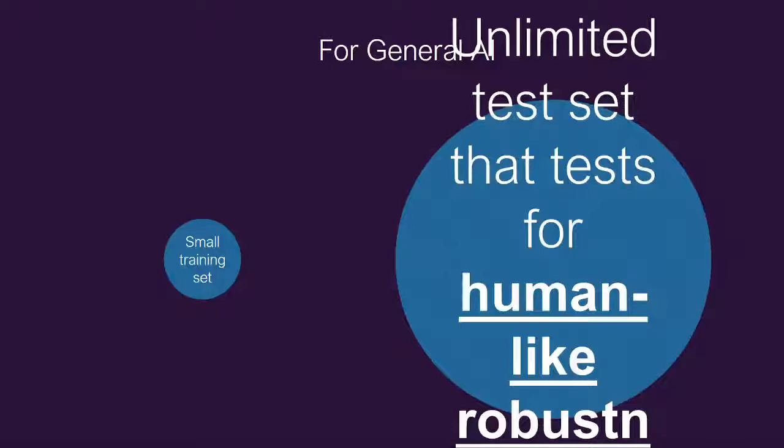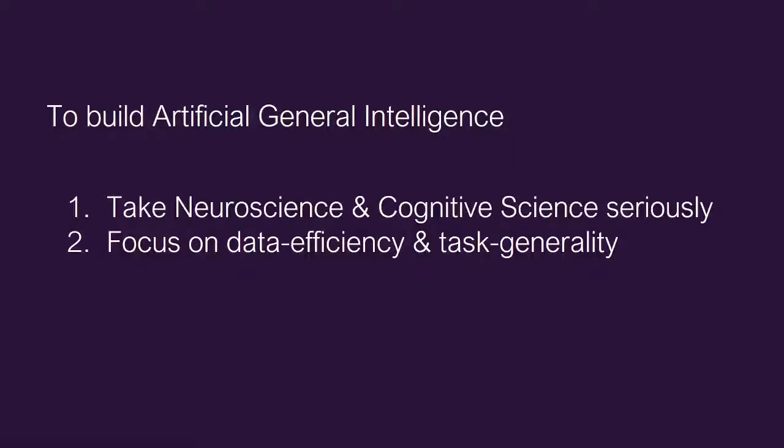To go to general AI, the slide is messed up, you have to start with a small training set and test on unlimited test set. That is how we humans work. We don't get unlimited training data, but always new things are thrown at us. And so those are the two things that we are focusing on at Vicarious.